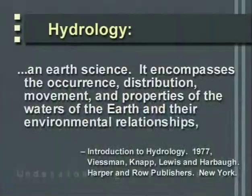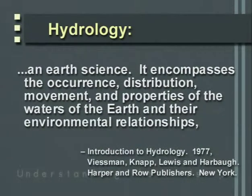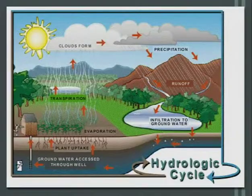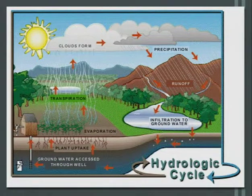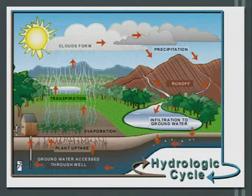Let's start with the definition of hydrology. Hydrology is an earth science. It encompasses the occurrence, distribution, movement, and properties of the water of the earth and their environmental relationships. The hydrologic cycle is a portrayal of the movement of water from the atmosphere to the land, to the stream, back to the atmosphere.